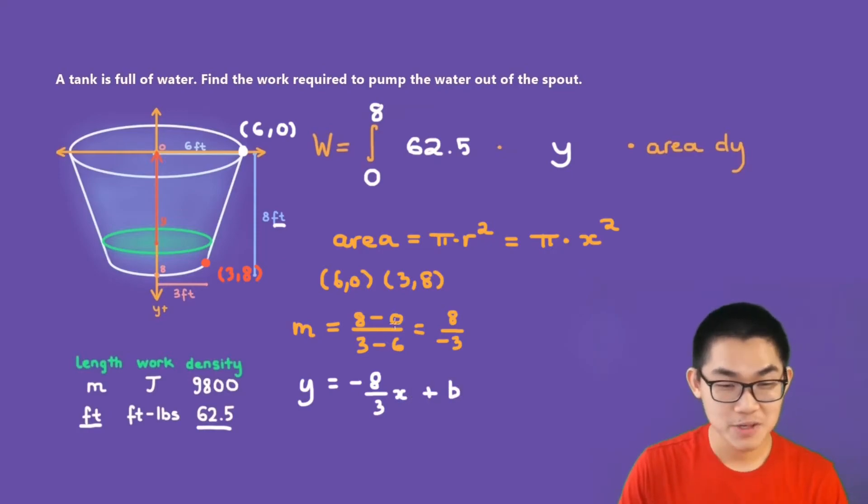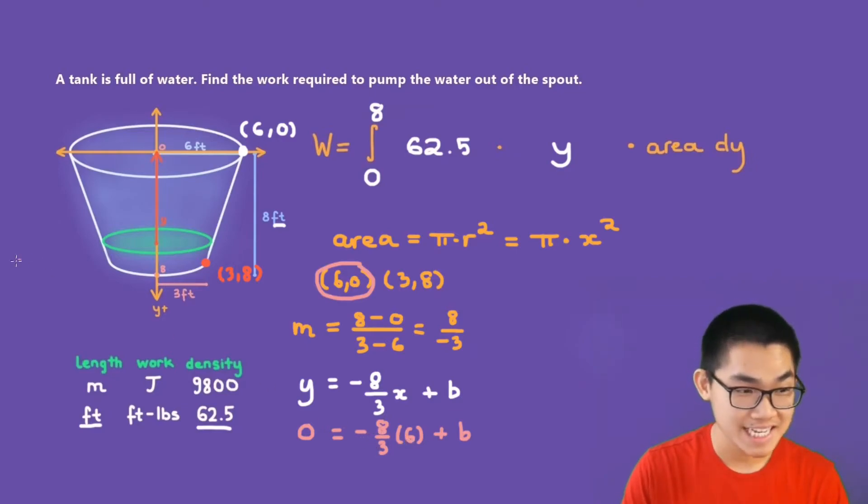Now all we have to do is substitute in one of these two points. Let's put in this one. So y is equal to 0, and x is equal to 6. So this will be negative 8 over 3 times 6 plus b. And negative 8 over 3 times 6 is equal to negative 16. So therefore, b is equal to 16. And let's delete this b and write in 16.